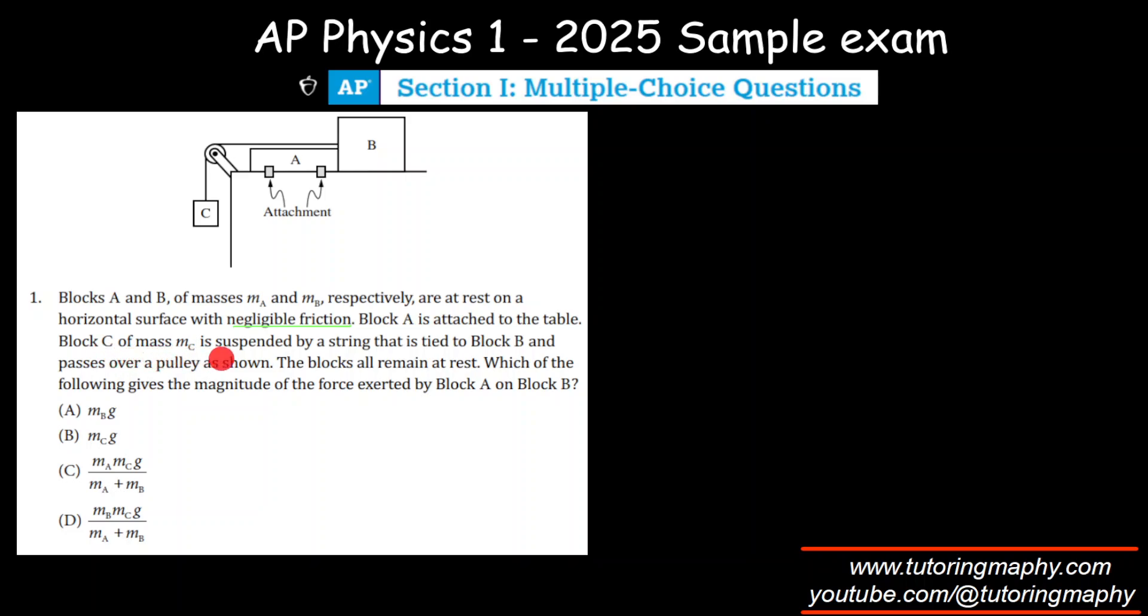Block C of mass MC is suspended by a string that is tied to block B. Of course, we can see that block B via pulley goes to block C. The blocks all remain at rest, which of the following gives the magnitude of the force exerted by block A on block B. It makes sense that there is a normal reaction between these two, a normal force between A and B because there is a common surface that they share, correct?